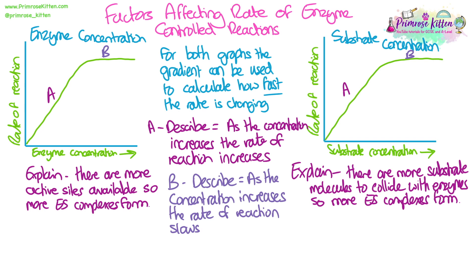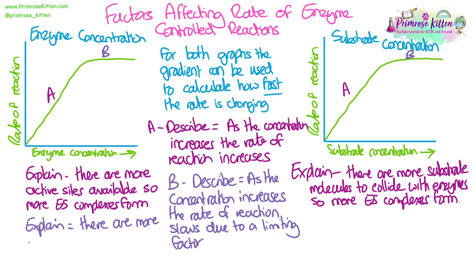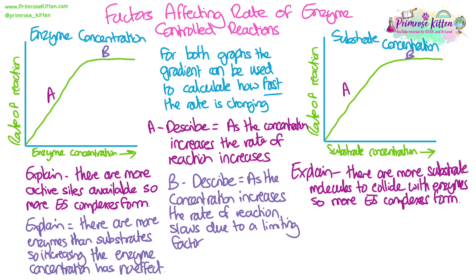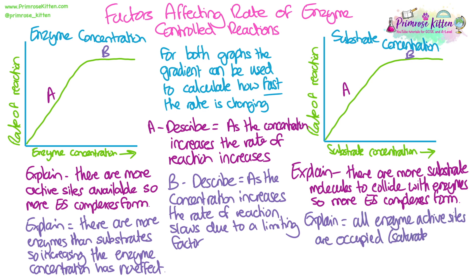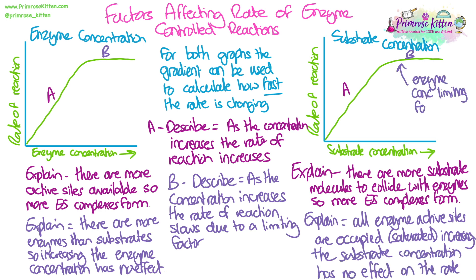The description for part B of both graphs is the same: as the concentration increases further, the rate of reaction slows down, and in both cases it's caused by a limiting factor. For enzyme concentration, the limiting factor is actually substrate concentration — at part B, there are more enzymes than substrates available, so increasing enzyme concentration no longer has an effect because there's not enough substrate for them to react with. For substrate concentration at part B, all of the enzyme active sites are occupied — they are saturated — so adding more substrate won't make any difference because there are not enough enzymes. Therefore, for part B on the substrate concentration graph, it is the enzyme concentration in the reaction that has become the limiting factor.